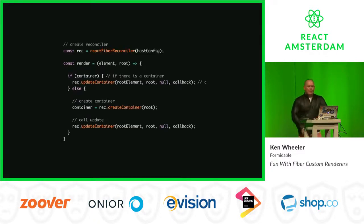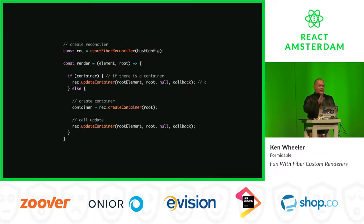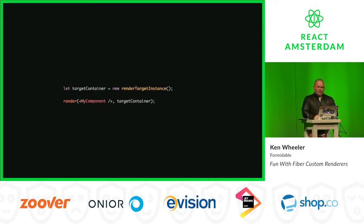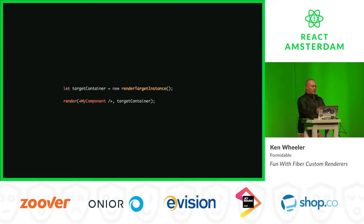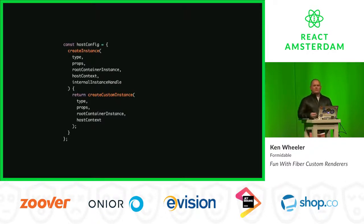Let's talk about writing a custom renderer. Starting at the implementation and working backwards, you have a render method. It takes an element and a root container. In React DOM, your root would be something like document.getElementById('root'). It checks if a container exists — if there is one, it updates it; if there isn't, it creates the container and then updates it. If you're writing a custom renderer, you'd create an instance of something else and pass it in as the container.